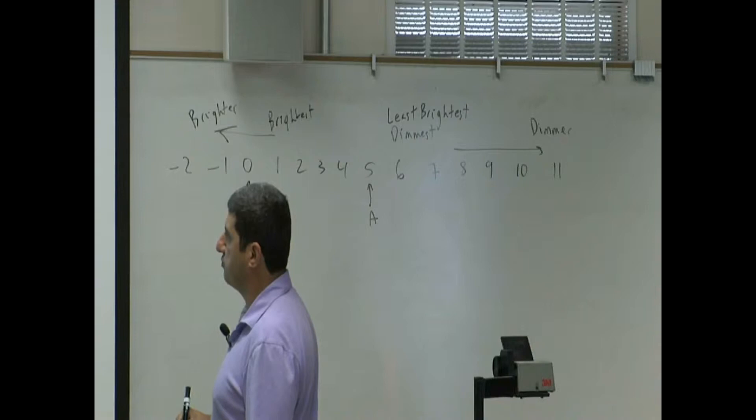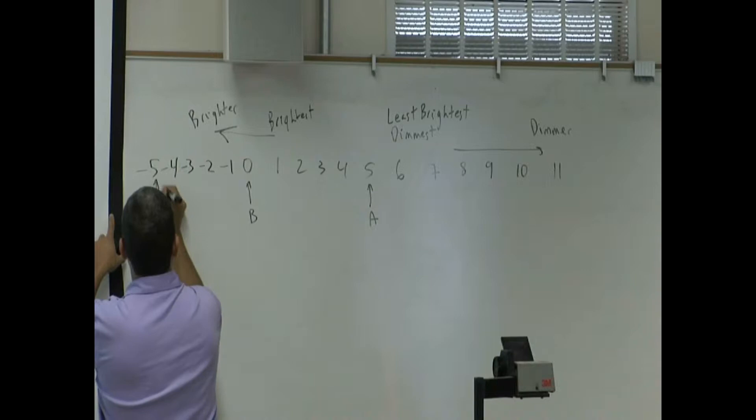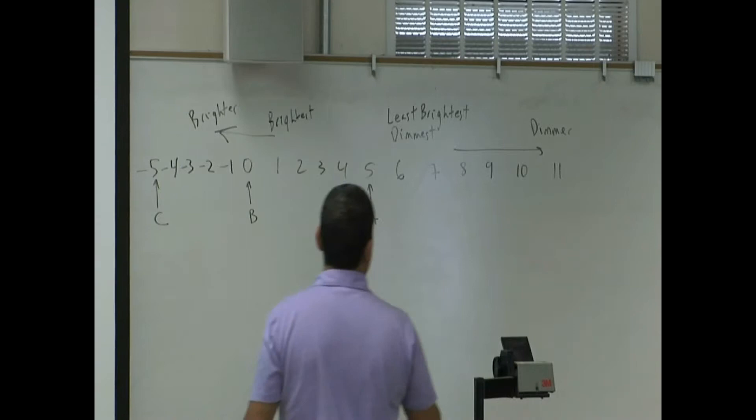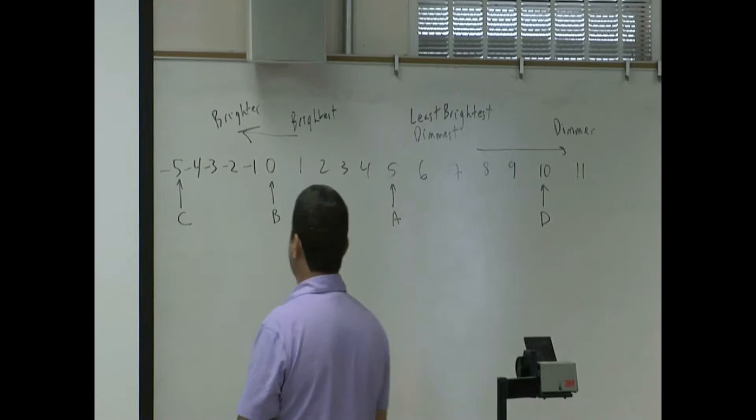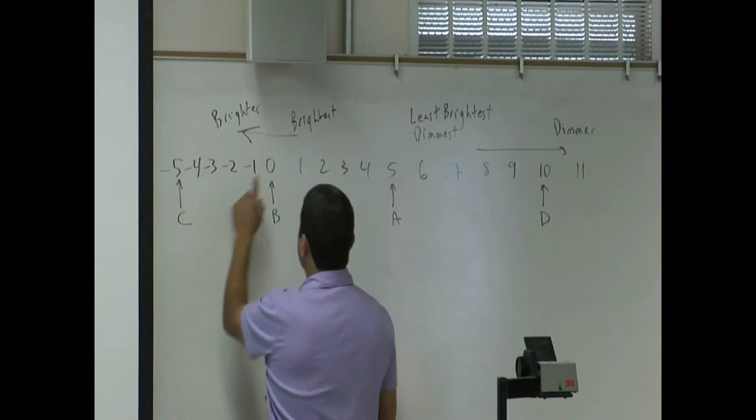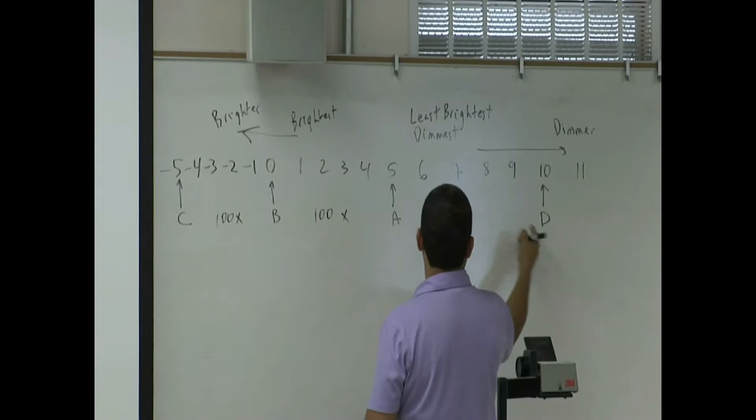Star B is 0. Let's say star B was rated a 0, star A was rated a 5, and star C was rated a negative 5. So this is star C. What would that mean? And then star D is a 10. So what would that mean? Well, that means star C is 100 times brighter than B. This guy is 100 times brighter than that guy. Why? It's to the left. And every 5 units is a factor of 100. So this guy is 100 times brighter than that guy.